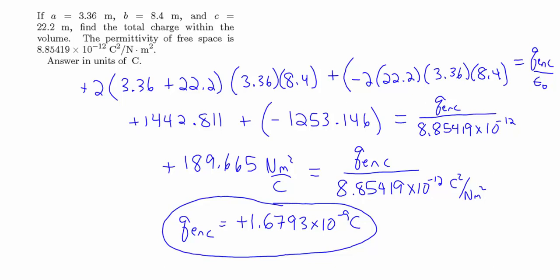This second problem is fairly similar to the first, where the electric field at the top was E and at the bottom was 2E and we solved for the enclosed charge. Here we had a more complicated situation where the electric field changed as a function of position. We were then given numerical values for a, b, and c, and used them along with Gauss's law to solve for the enclosed charge.